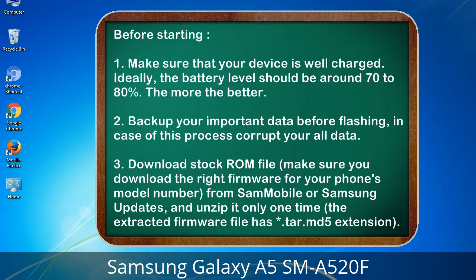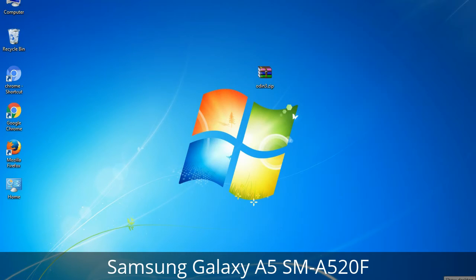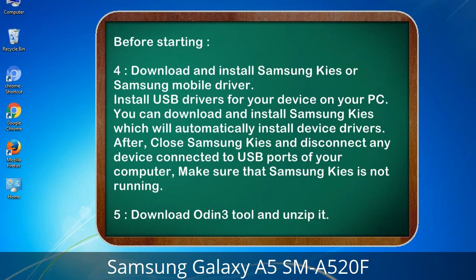3. Download the stock ROM file. Make sure you download the right firmware for your phone's model number from Sammobile or Samsung Updates, and unzip it only one time. The extracted firmware file has a *.tar.md5 extension. 4. Download and install Samsung Kies or Samsung mobile driver to install USB drivers for your device on your PC. After installation, close Samsung Kies and disconnect any device connected to USB ports, making sure Samsung Kies is not running. 5. Download Odin 3 tool and unzip it.